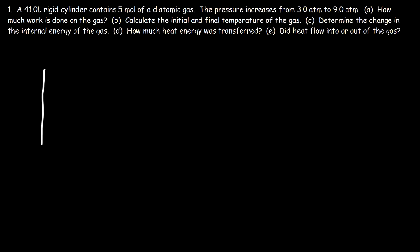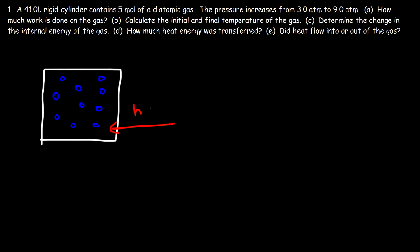Imagine a container with a fixed volume with gas particles inside. Once you add heat, the temperature will increase. Since the volume is constant, that causes the pressure to increase — that's why it goes from 3 to 9 atm. We're heating the gas molecules and they cannot expand, so both the temperature and the pressure go up.